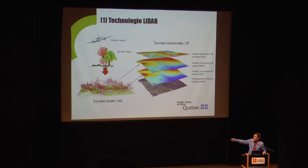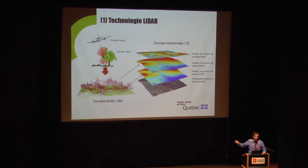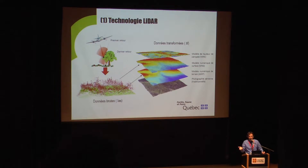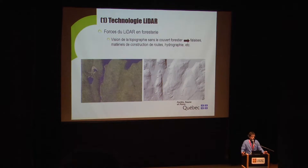We can look at the surface digital model. We can see the trees are at 320 meters. We can associate the MNT minus the MNS — the height of the canopy. Airborne photography is still necessary. LIDAR can tell us that it's a plane, but if you want to see if it's a swamp, airborne photography is still very important.